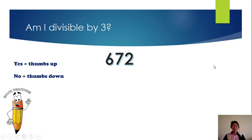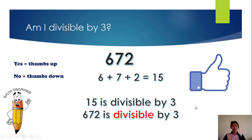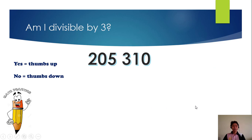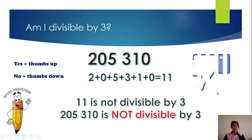672. So 6 plus 7 plus 2 is 15. 15 is divisible by 3, therefore it is divisible by 3. Another: 205,310. So 2 plus 5 is 7, plus 3 is 10, plus 1 is 11. 11 is not divisible by 3, therefore 205,310 is not divisible by 3. Thumbs down.